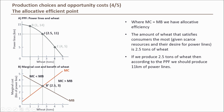This reallocation can be illustrated by a leftward shift on the PPF towards point J. Again, this leftward movement will only stop once point J is reached, where marginal cost equals marginal benefit.